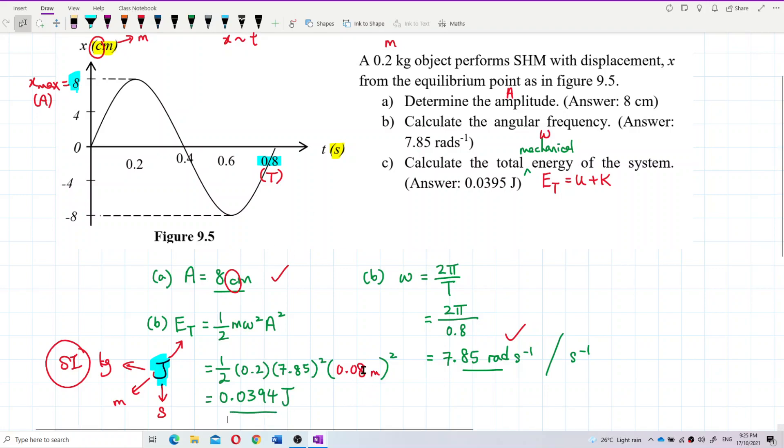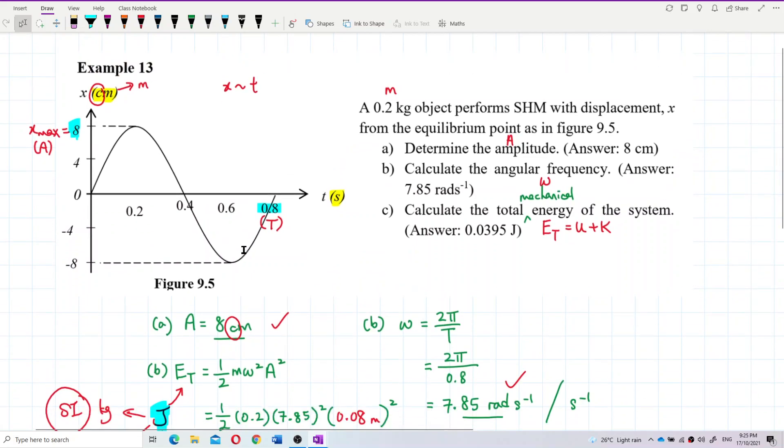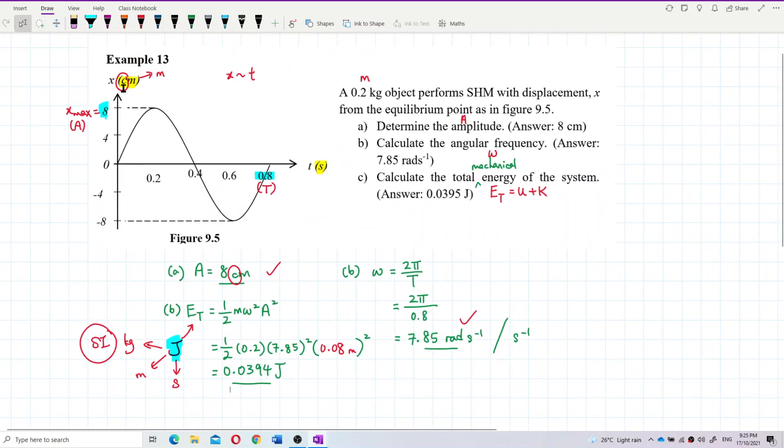The answer is 0.0394. 0.0394 Joule SI unit. Remember. The amplitude, you must change from centimeter to meter. Be careful with the unit at the axis. Always check the unit at the axis. I think that's it. That's the answer. 0.0934, 0.0934 Joule. That's it.